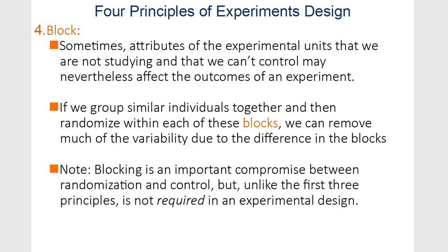The fourth principle is to block. Sometimes we can't control parts of the outcome, so we go ahead and group similar units into blocks — by race, gender, or some other relevant variable — and then randomize within each of those blocks. It's basically another way of taking into consideration other factors that might affect your response. You don't always have to block, though.